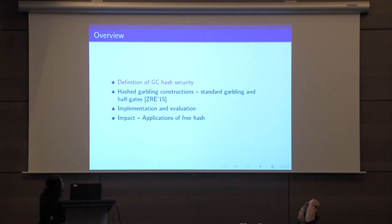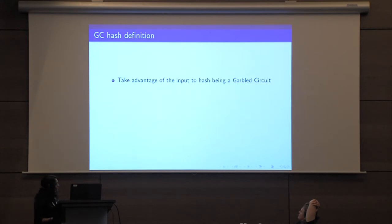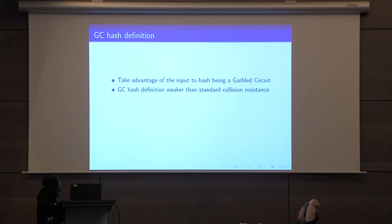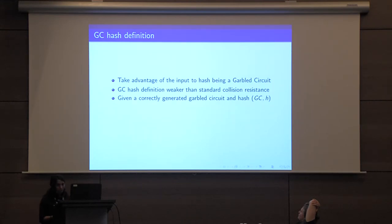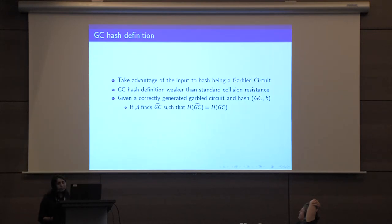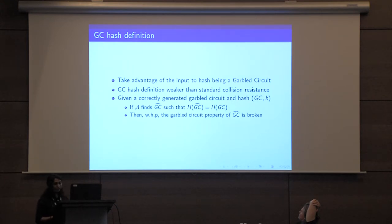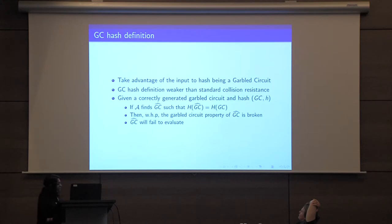I'll begin by giving our definition of garbled circuit hash security. The high-level idea is that we take advantage of the fact that the input to hash is a garbled circuit, which means it has to be evaluatable under the eval function. Our definition is weaker than the standard notion of collision resistance. Given a correctly generated garbled circuit and its corresponding hash, the adversary is allowed to come up with another garbled circuit GĈ such that the hash collides, but if that happens the garbled circuit property of GĈ is broken, meaning GĈ will fail to evaluate.